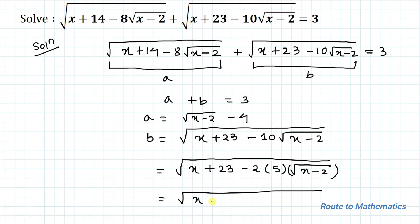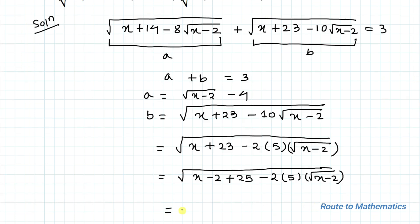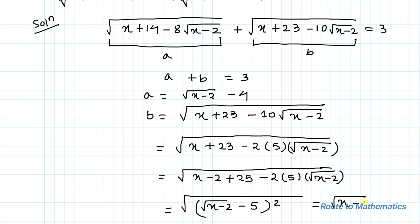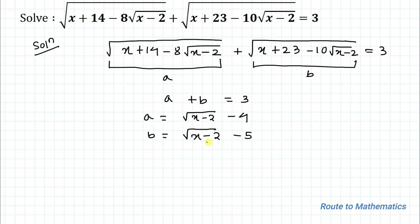23 can be written as (-2 + 25), where 25 is the perfect square of 5, minus 2 × 5 × √(x-2). Applying the algebraic identity we get √((√(x-2) - 5)²), which equals √(x-2) - 5. So our value of b = √(x-2) - 5.